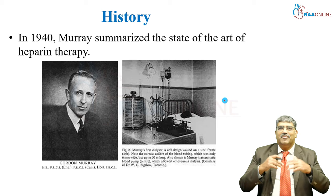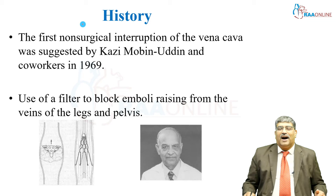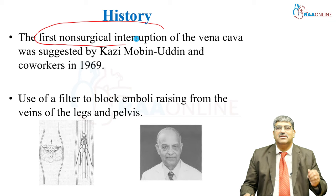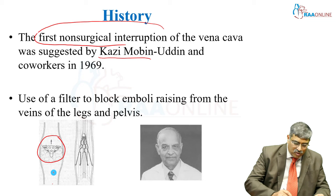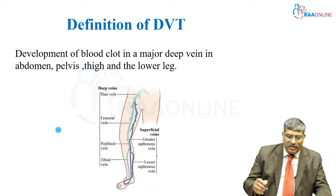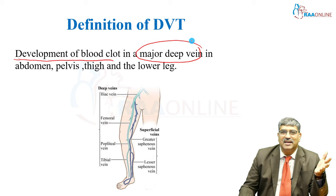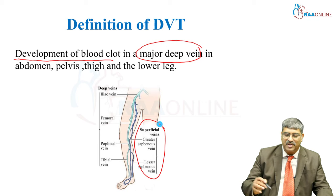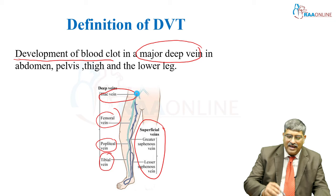Then came pharmacological treatment for thrombus. In 1940, Murray summarized the state of apparent therapy for deep vein thrombosis. Non-surgical, non-pharmacological intervention was suggested by Kazi Mobin in 1969, where he used a filter in the inferior vena cava so that the thrombus from the lower limb cannot move into the pulmonary circulation. Coming to the definition — deep vein thrombosis is the development of a blood clot in the major deep veins of the abdomen, pelvis, thigh, and lower leg. The superficial veins are the great saphenous and lesser saphenous veins, while the deep veins include the tibial vein, popliteal vein, femoral vein, and iliac vein.